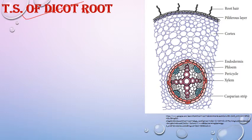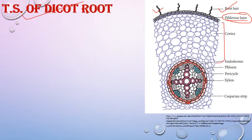Now for the TS of dicot root. In the root, the epidermis is present — it is also called the piliferous layer, because 'piliferous' means hair-bearing structure, and this hairy layer bears root hairs. The epidermis is a single layer, compactly arranged, made of parenchymatous cells — a continuous layer without interruptions. Some epidermal cells form outgrowths called root hairs, which are unicellular. In roots, the epidermis is also called epiblema or piliferous layer.